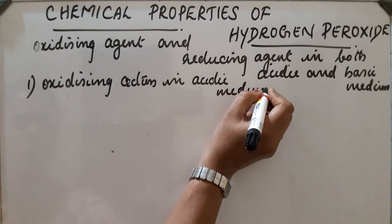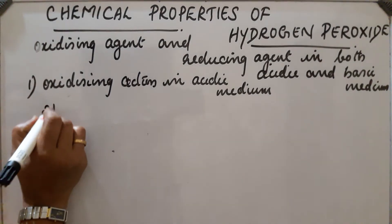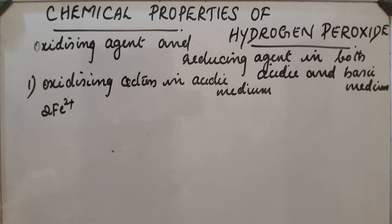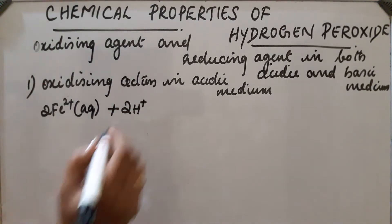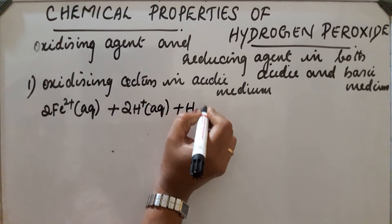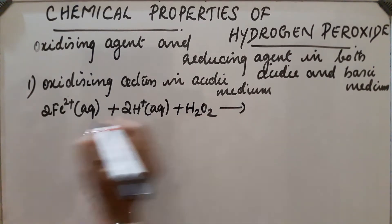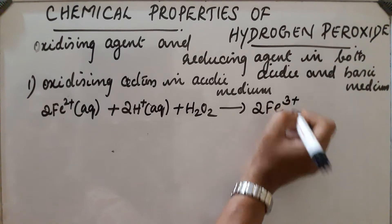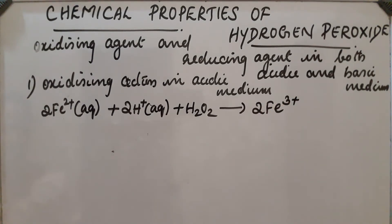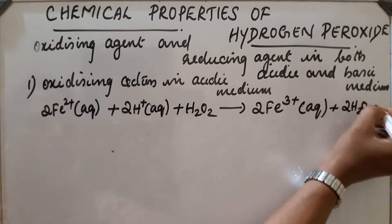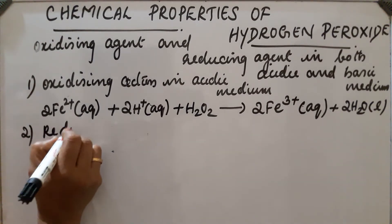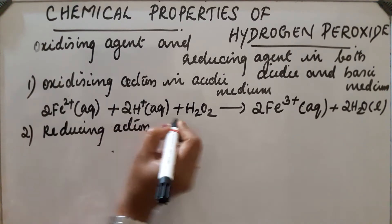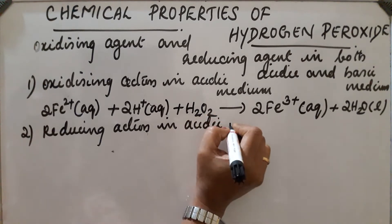First case: oxidizing action in acidic medium. Example: 2 Fe²⁺ ions in acidic solution plus H₂O₂. Fe²⁺ is oxidized — this is the oxidizing action of H₂O₂. H₂O₂ oxidizes Fe²⁺ to Fe³⁺; oxidation takes place, plus 2 H₂O is produced.